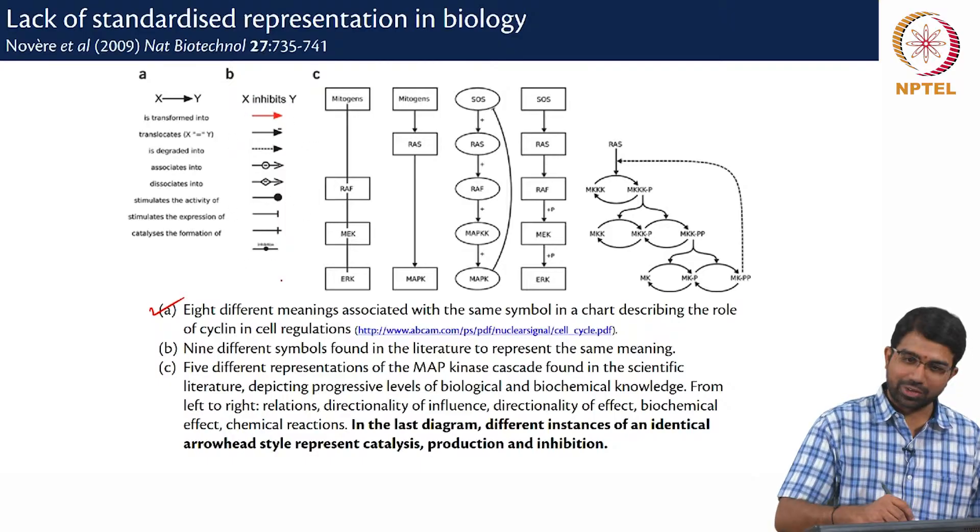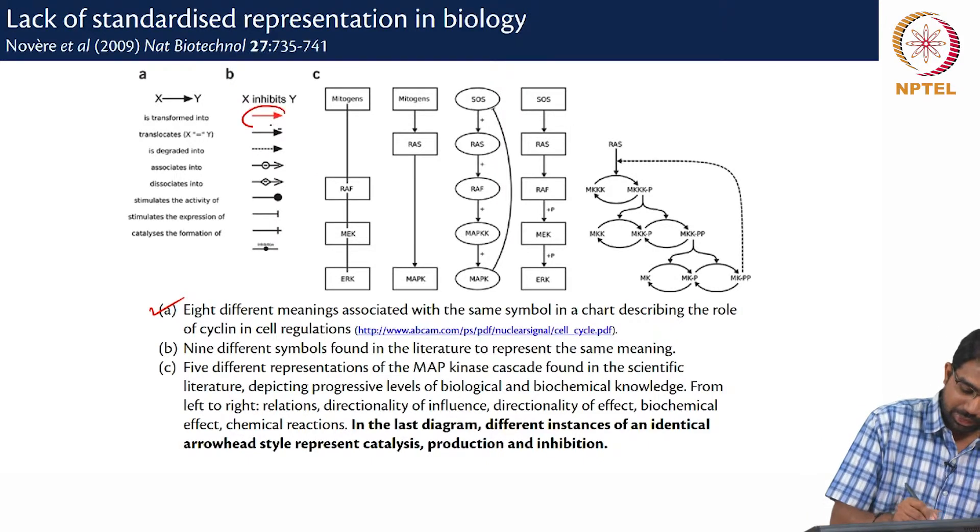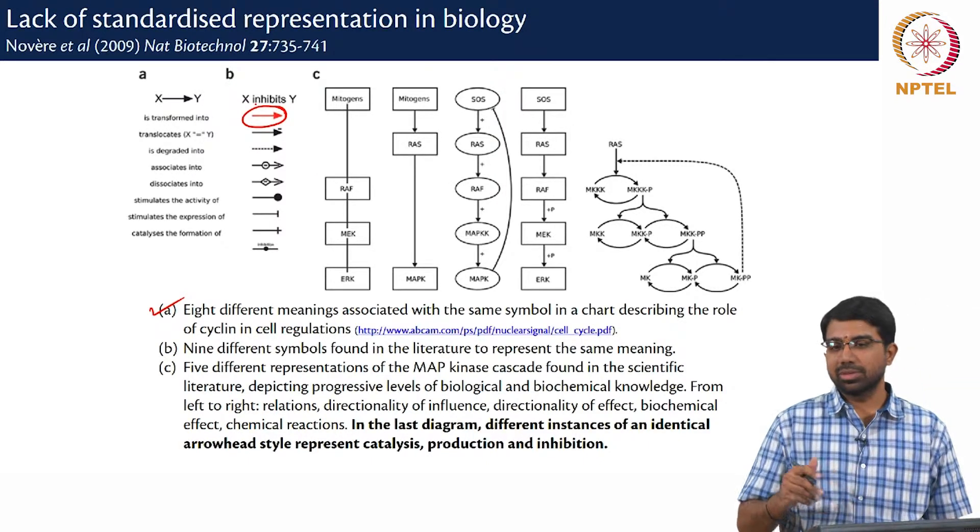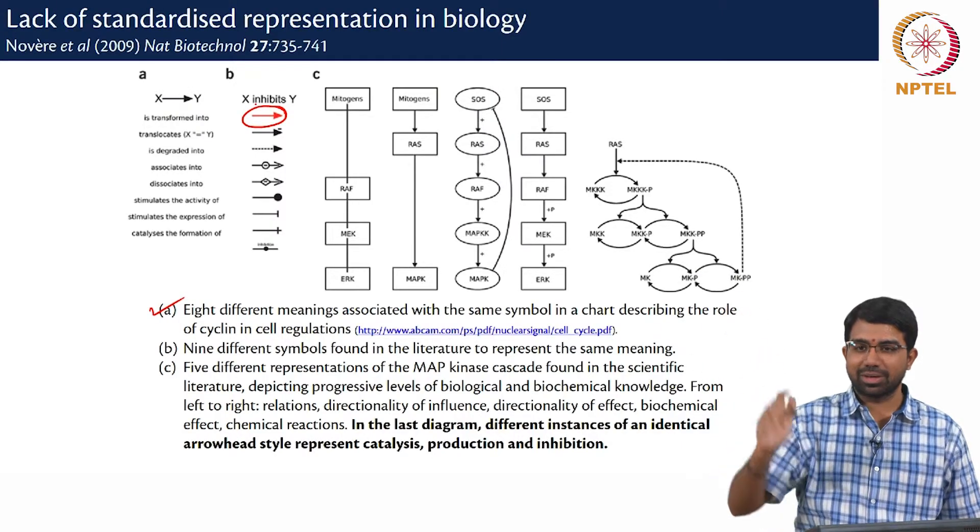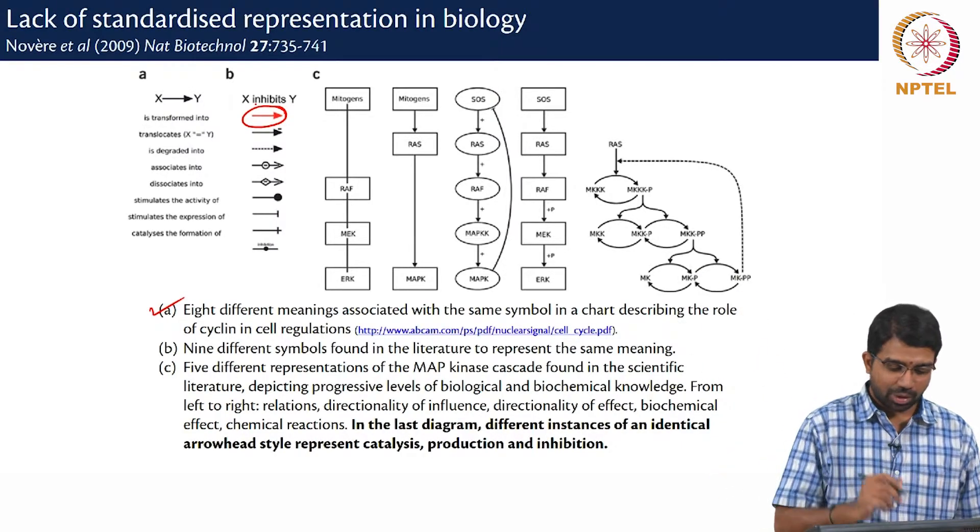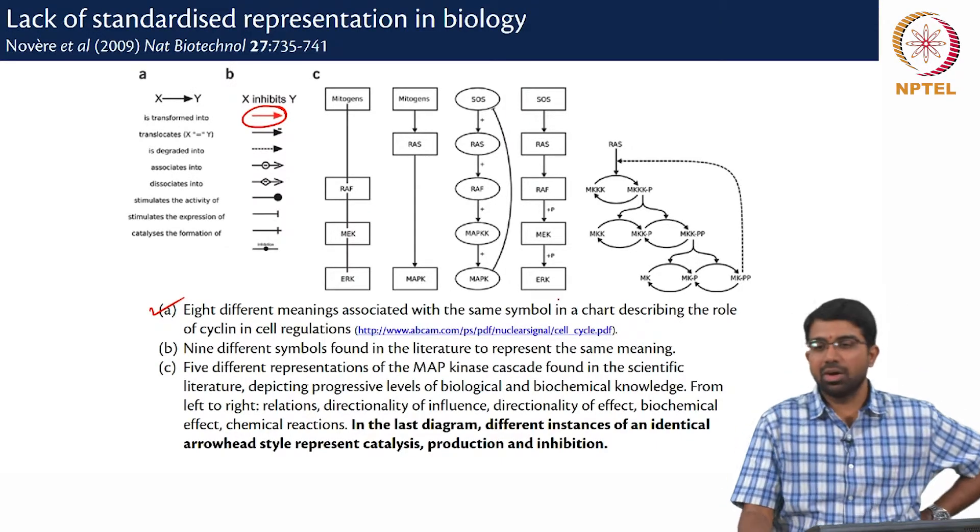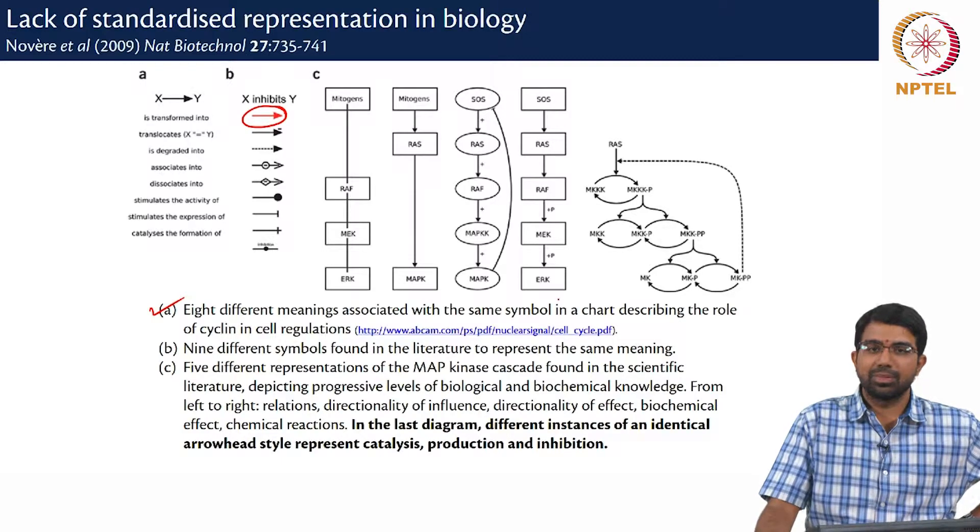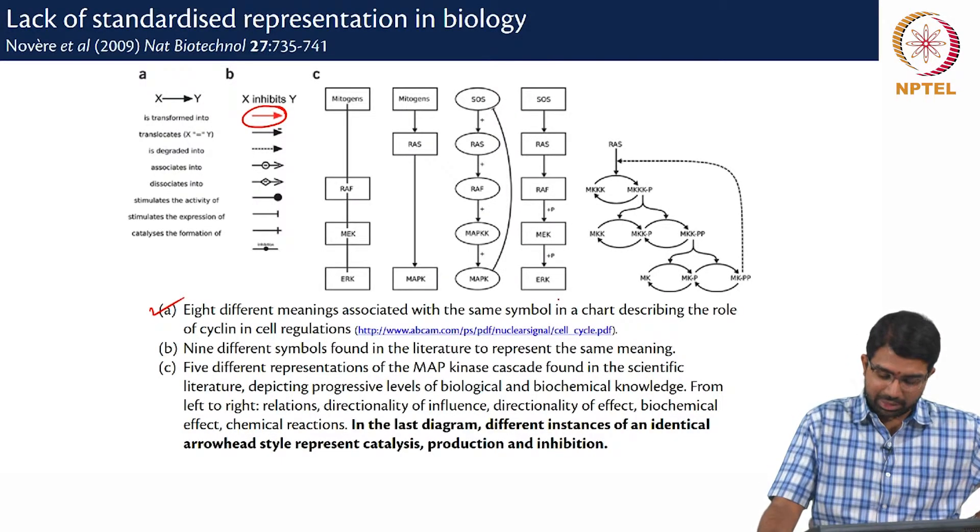For inhibition, there are so many different ways that one can represent inhibition. The worst of them being a red arrow because when you print it in a paper, it gets mangled. When you make a black and white print and so on, so all these become problems and here, there are five different representations of the very same pathway, the MAP kinase pathway. Very popular signaling pathway.